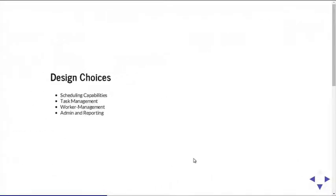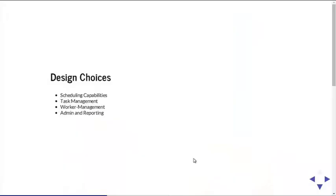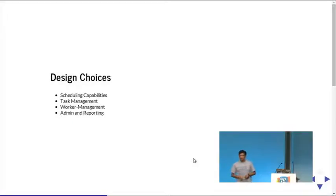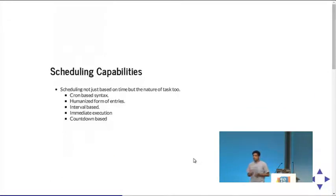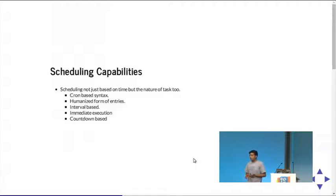Coming back to design choices, I've identified four wrappers: scheduling capabilities, task management, worker management, and admin and reporting — because at the end of the day you want to see how your workers are performing, how many tasks succeeded or failed. Scheduling capabilities can be immediate execution or scheduled tasks. You should evaluate a system that has both. Celery lets you do both — you can put a cron-tab style entry in the system, for example execute every morning at 7:30 AM.